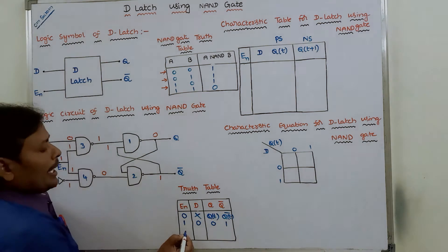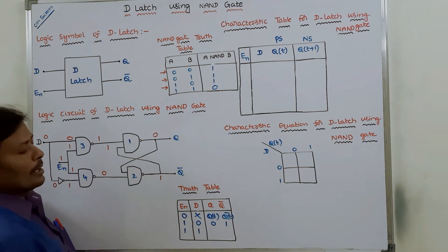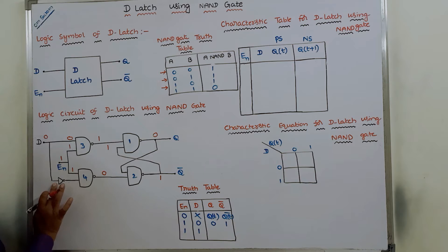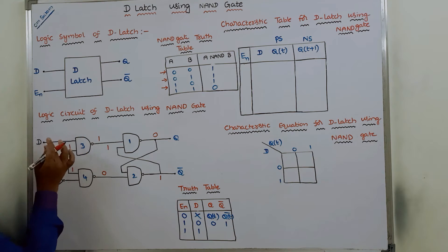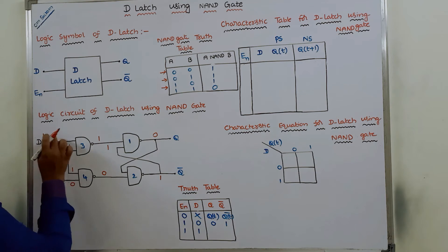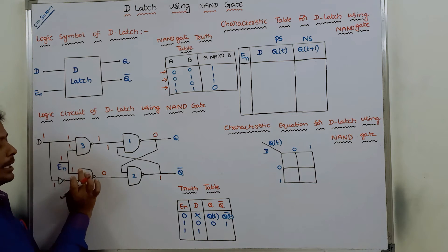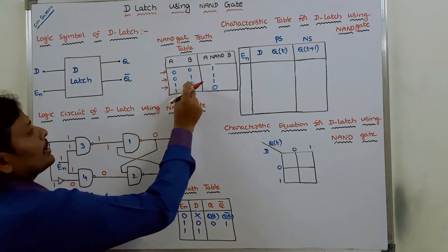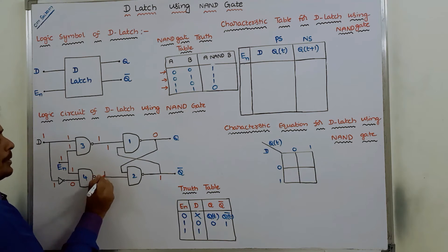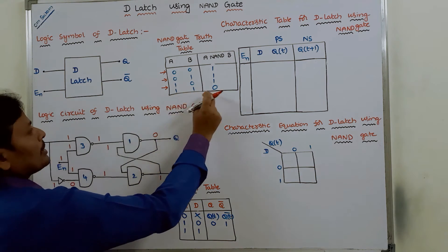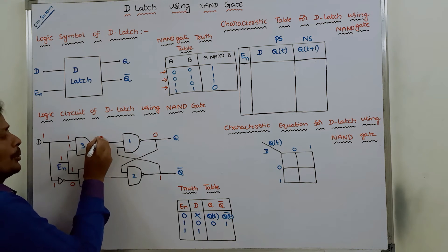Next case: enable input is 1 and D=1. D=1 is directly passed to the third NAND gate, and the complement of 1 is 0, which is passed to the fourth NAND gate. For the fourth NAND gate, inputs are 1 and 0 — the output is 1. For the third NAND gate, both inputs are 1 and 1 — the output is 0.